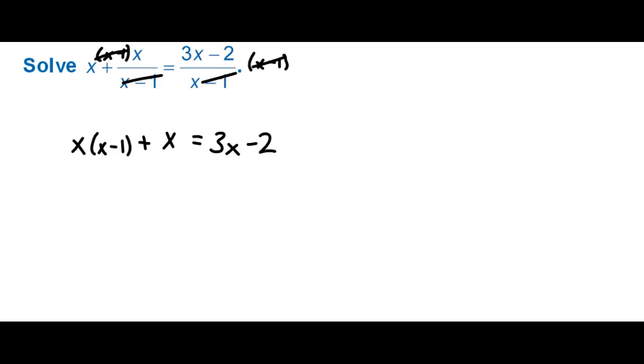So then what we're going to want to do next is distribute this x to each term. So x squared minus x plus x equals 3x minus 2. These guys cancel out so we have x squared and then let's bring these over so let's subtract 3x from both sides and add 2 to both sides and then we're just left with 0 on this side.